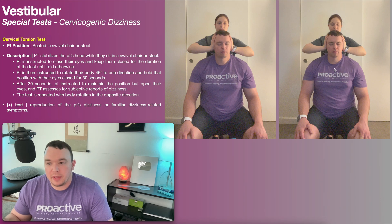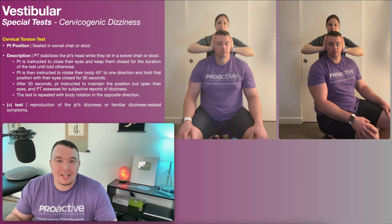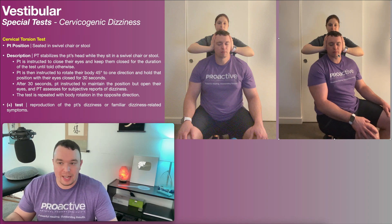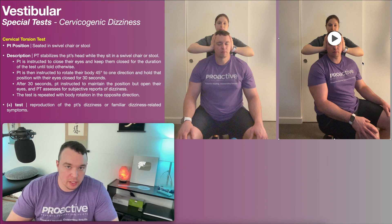Then this test is repeated on the other side. She's going to stabilize my head and I'm going to use my feet to swivel to the left — so left body rotation, which is relative right rotation of the neck. So this is the right-sided test. After 30 seconds, I'm going to open my eyes and let her know if I had any dizziness or related symptoms. This would be a positive test if either of these test positions — doesn't have to be both, could just be one — reproduce that dizziness or dizziness-related symptoms.